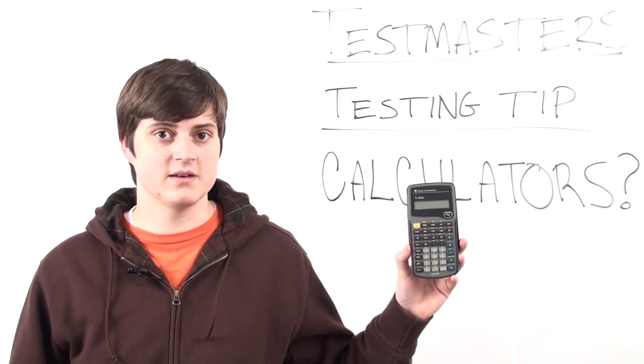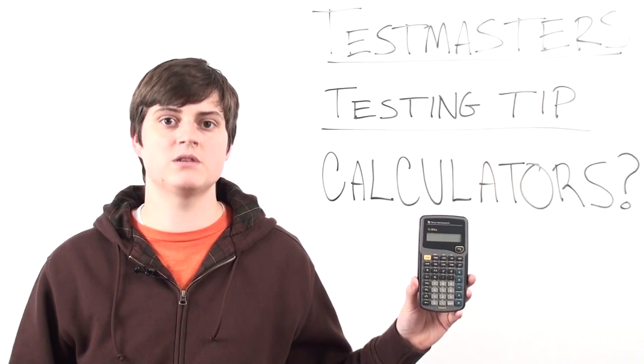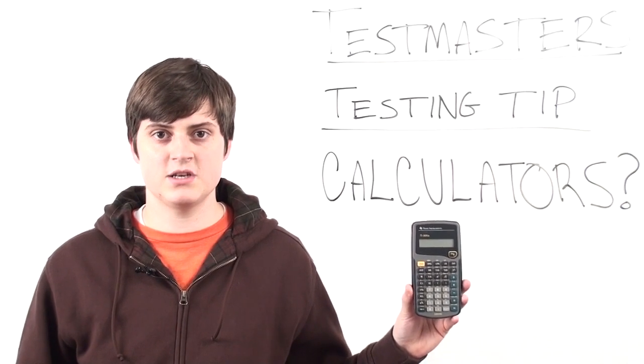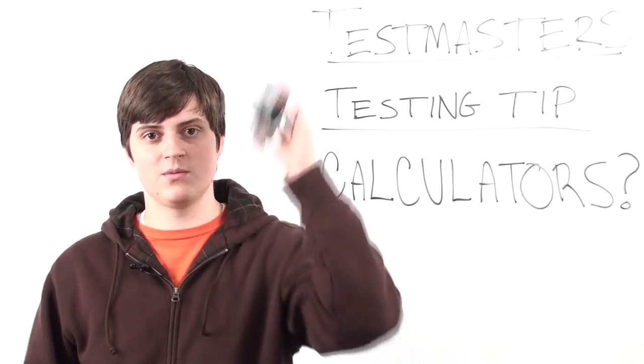Next, we have the scientific calculator. The scientific calculator does the standard four functions, but also now it has the trigonometric functions - sine, cosine, and tangent - and it has a pi key. Still not quite what you want, so don't bring that.